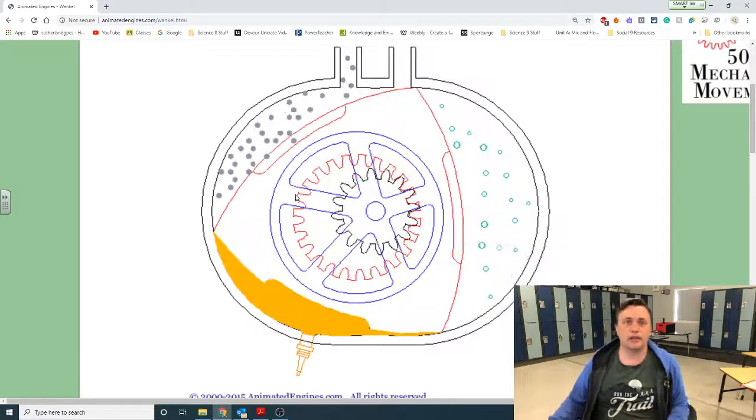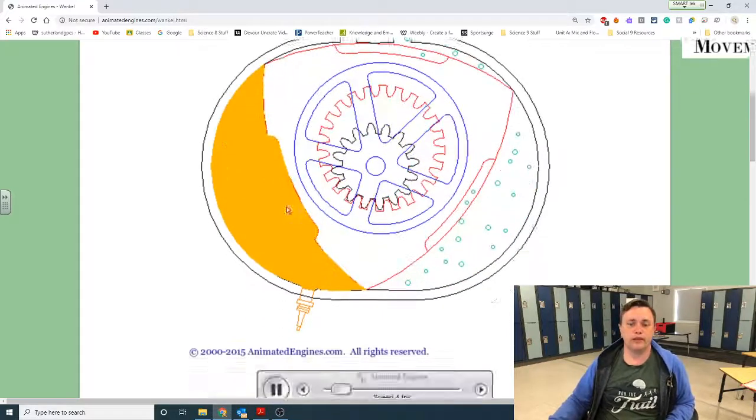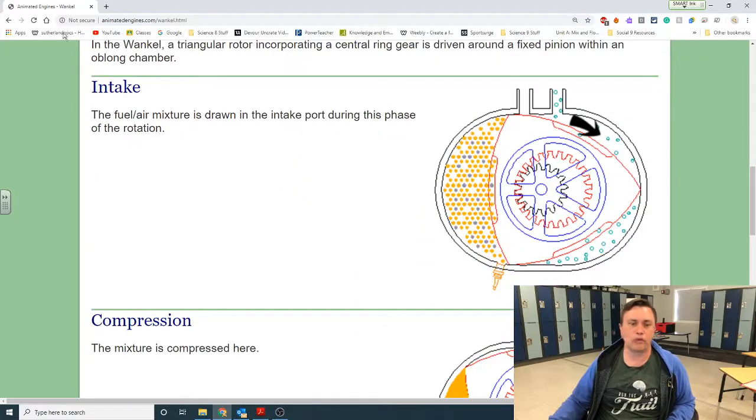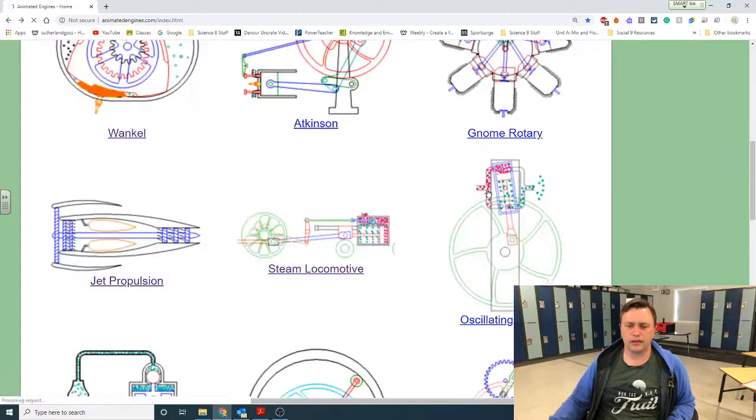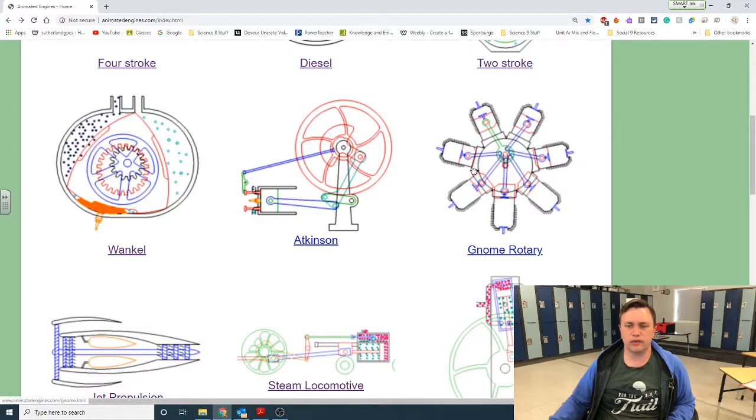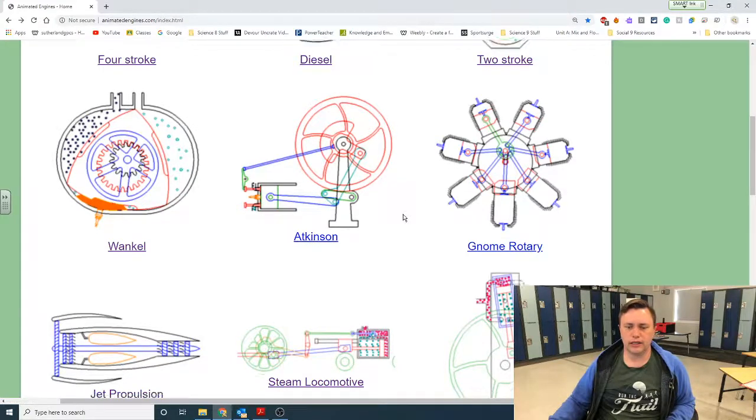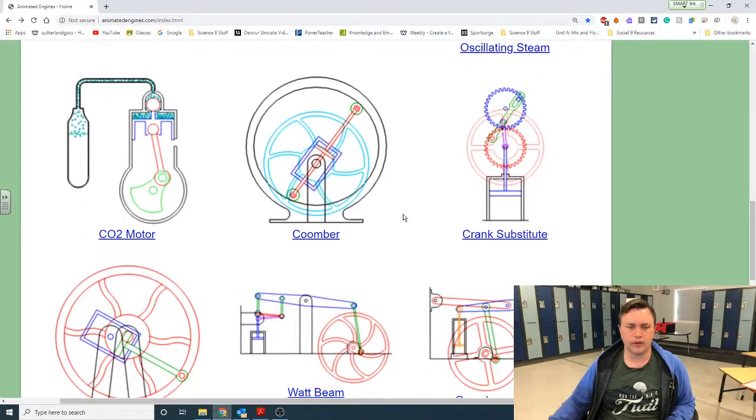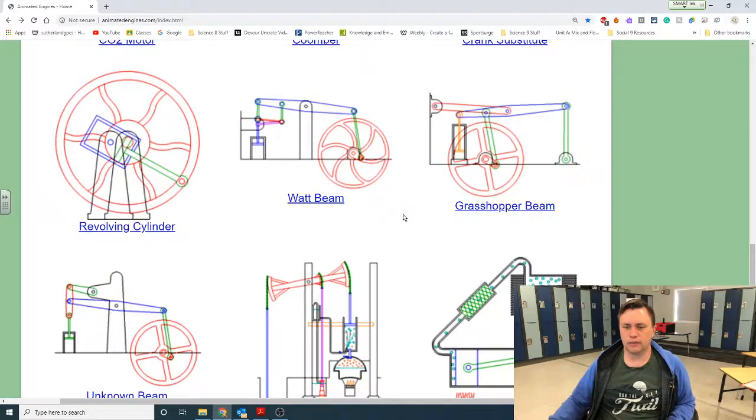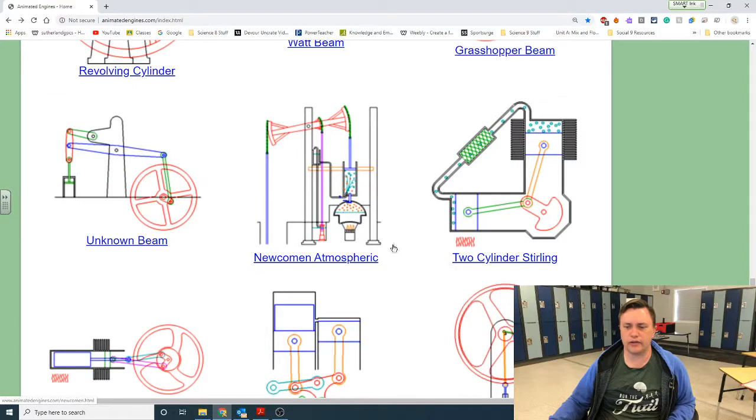That is what creates the power to drive the vehicle if your parents have a Wankel rotary engine. There's all sorts of different things. If you enjoy engines like this, the gnome rotary one is really cool. The grasshopper beam one is kind of cool. Some of these steam ones are very interesting. The Stirling one is straight up interesting.